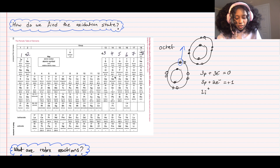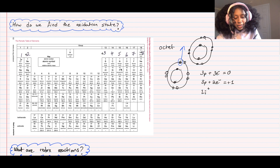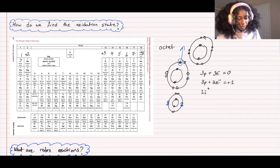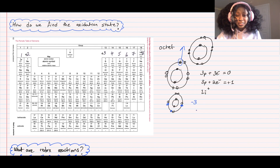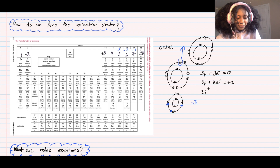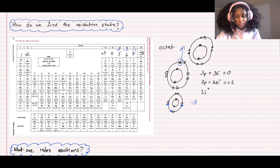Carbon in group four tends to share electrons since it's in the middle. Nitrogen is in group five with five valence electrons, so it's easier to gain three to complete the octet - giving it a charge of negative three. Oxygen is in group six with six valence electrons, so it gains two, giving a charge of negative two. Following that pattern: negative one for group seven. Group eight already has eight valence electrons, so those elements are stable.